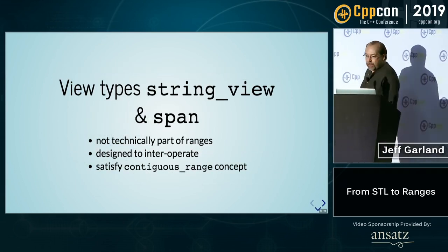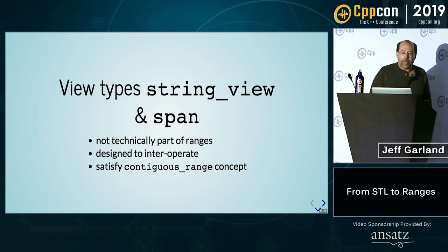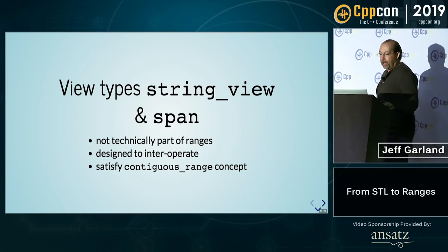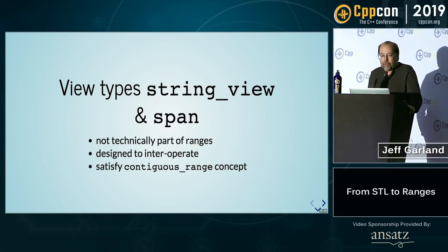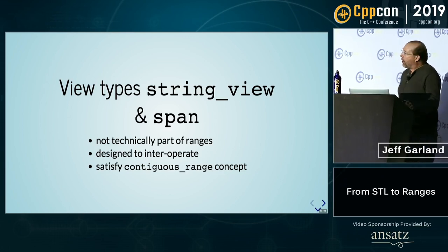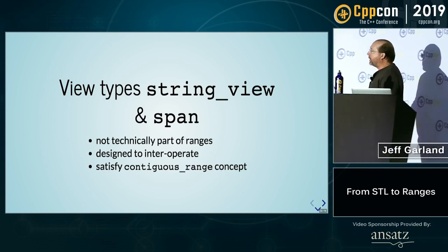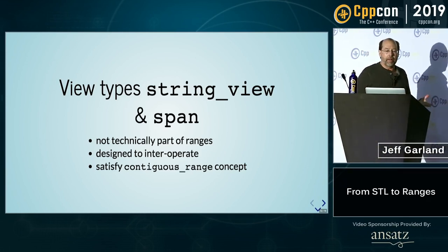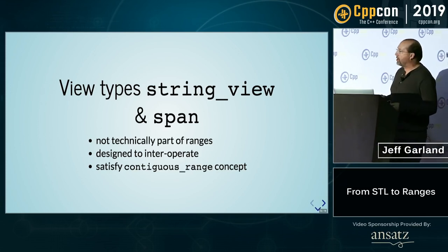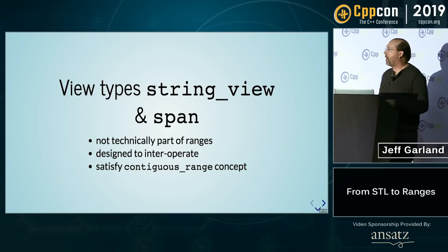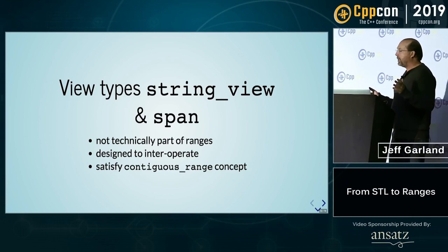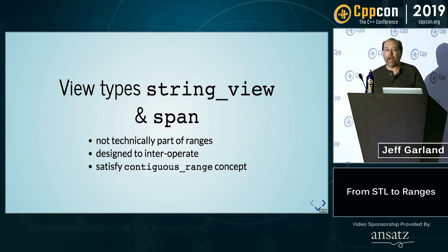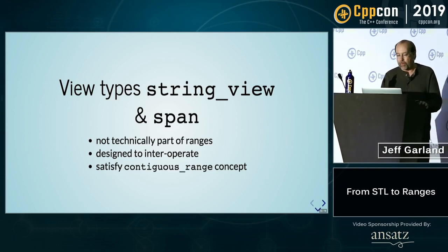Let's talk a little bit about string_view and span. Then I'm going to show you the rest of the views in C++20, or a big chunk of them, and some examples. String_view and span aren't really technically part of the ranges proposal, but they are range types in the sense that they're really there to interoperate. They satisfy a contiguous range concept — a contiguous range is exactly what you think, it's laid out contiguously in memory — and that allows you to have high performance for many operations.